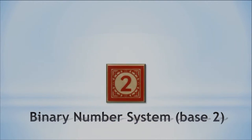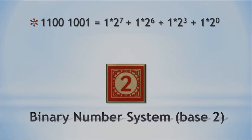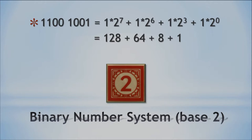Here's a longer example: 11001001. You go right to left — 2 to the zeroth, 2 to the third, 2 to the sixth, 2 to the seventh, skipping the zeros as a shortcut. Adding that together: 128 (2 to the seventh) plus 64 (2 to the sixth) plus 8 (2 to the third) plus 1 equals 201 in decimal.